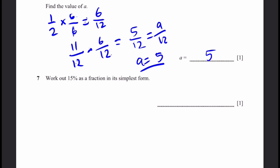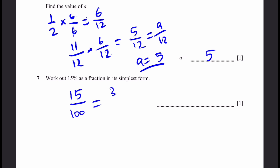Question 7. Work out 15% as a fraction in its simplest form. Percent simply means divide by 100, so that's 15/100. Dividing both sides by 5 gives 3/20. That's the answer.